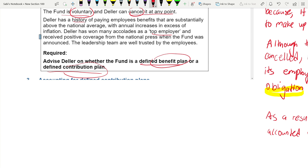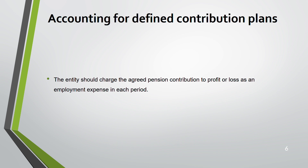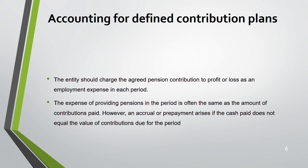Now moving to accounting for defined contribution plans — this is very simple compared to defined benefit. Whatever contribution you make is recorded as an expense in the P&L account as employment expense each period. However, the contribution amount and the cash actually paid might differ, and when they differ an accrual or prepayment arises.